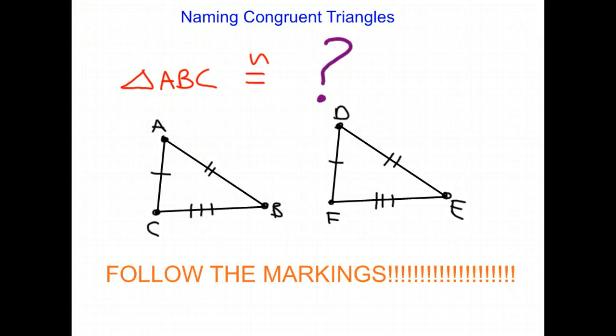So what exactly do I mean by following the markings? So let's take a look at our first triangle, triangle ABC. We start here at A and we travel down the side with the two markings first.